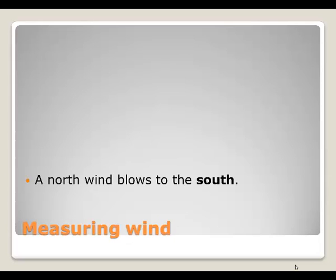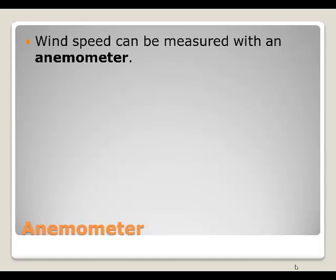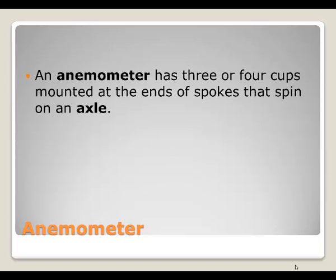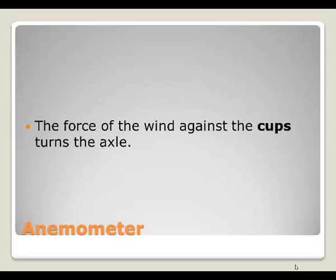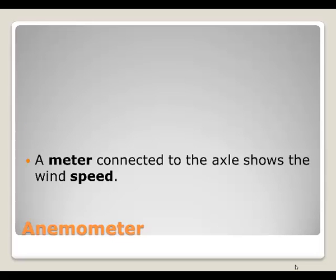And a north wind blows toward the south. An anemometer: wind speed can be measured with an anemometer. It has three or four cups mounted to the end of spokes, and it spins on an axle. The force of the wind against the cups turns that axle, and there is a meter connected that helps measure wind speed.